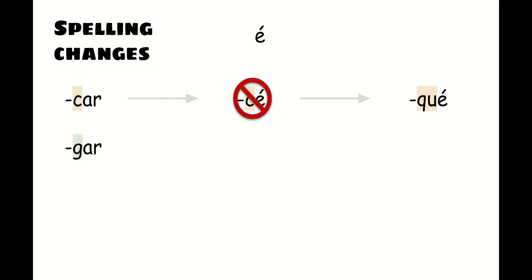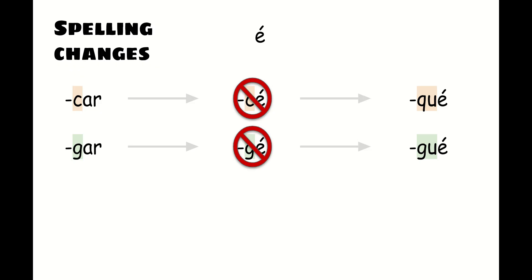When changing the spelling of verbs that end in -gar, you would add the -é ending. But the problem is that g-a-r is said with a hard g sound, because a 'g' next to an 'a' makes a g sound. When you have a 'g' next to an 'e' in Spanish, it makes a soft sound — like 'h'. So we can't spell it as g-e; instead, we spell it as g-u-e. G-u-e is how you spell the 'gay' sound in Spanish.